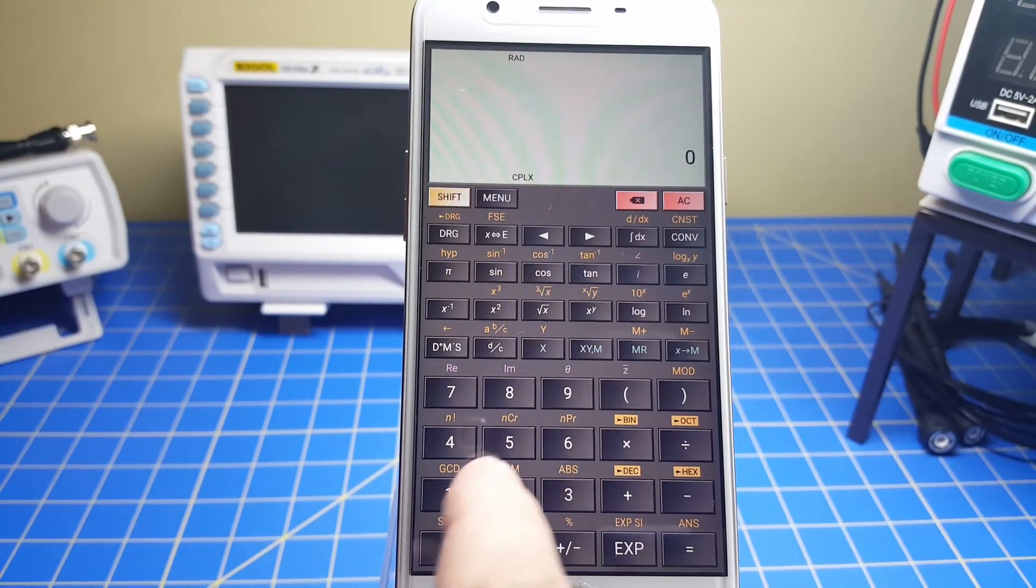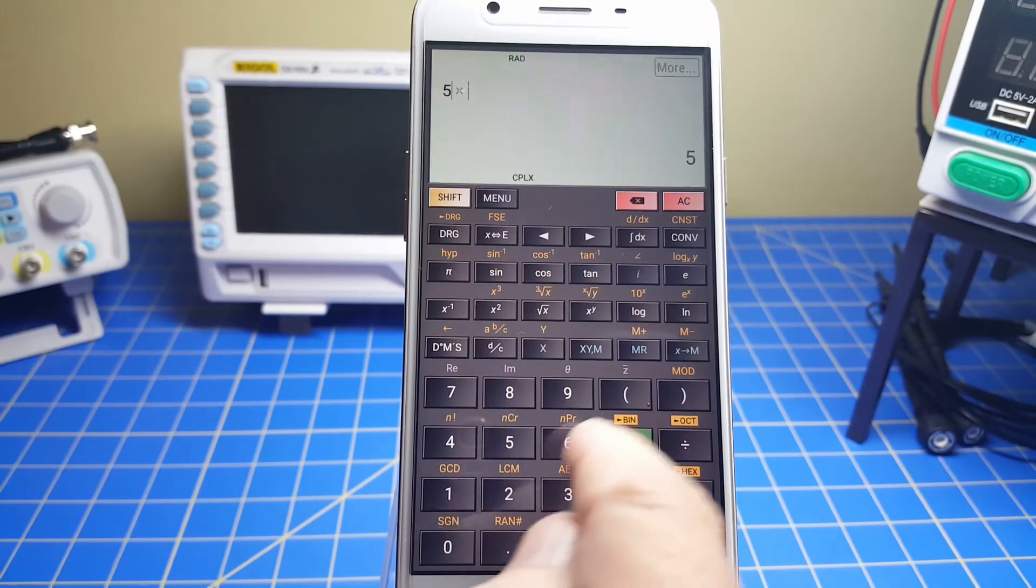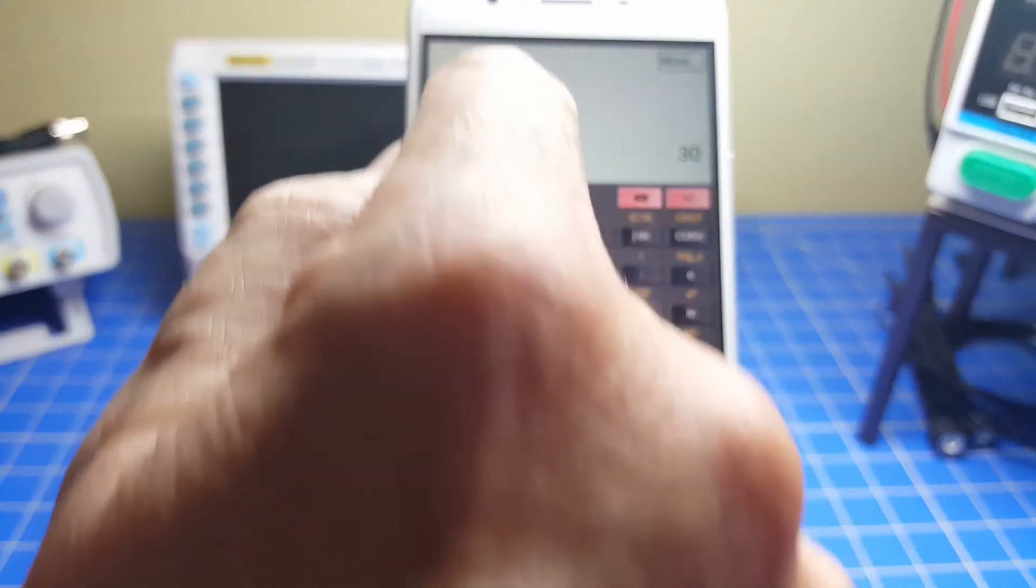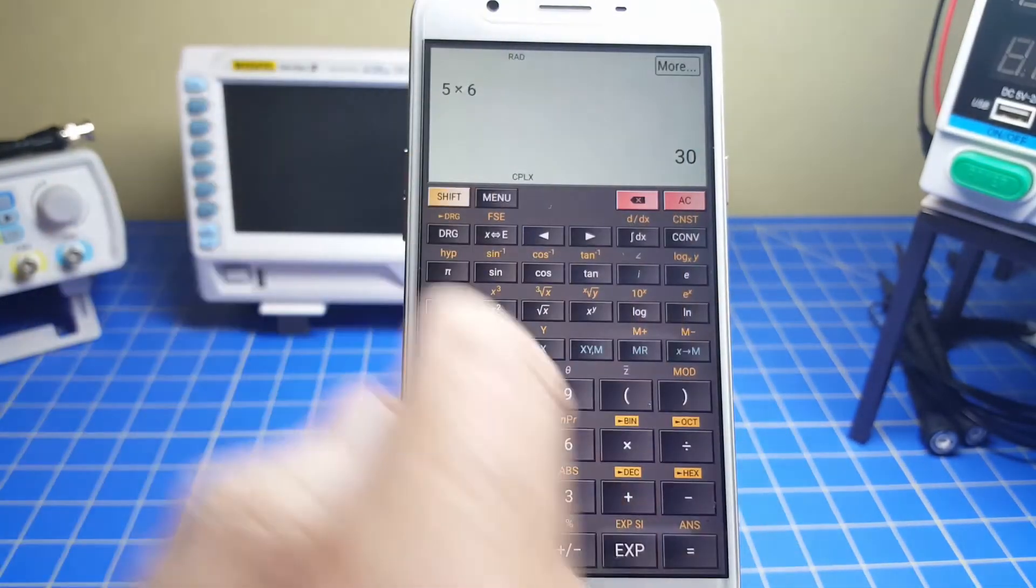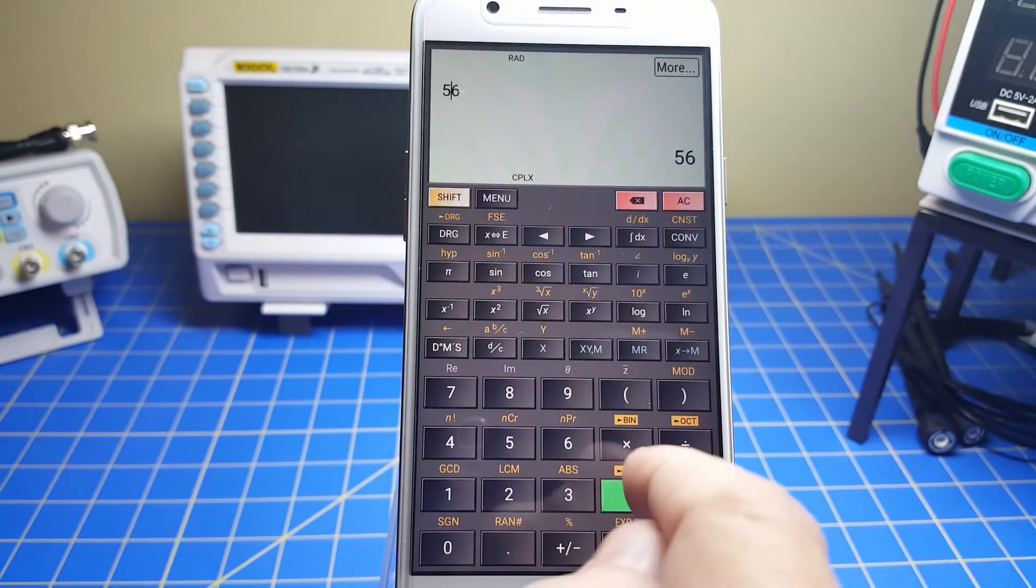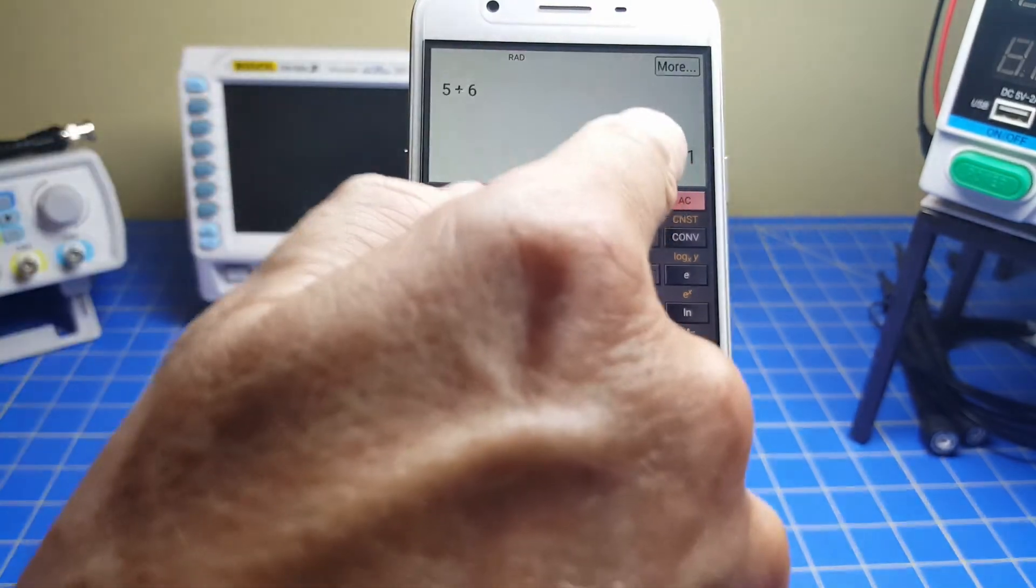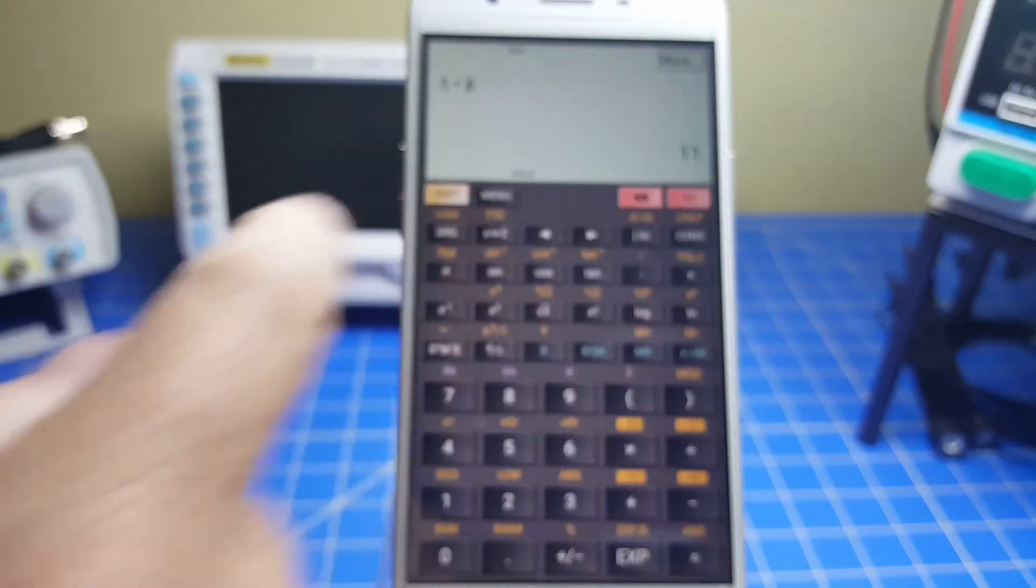Now, another wonderful thing about this is it has a touch screen. So you can say 5 times 6 and go back and say, no, I meant plus. So you just press where you want the cursor and delete that and put in a plus. And notice as you enter the data, it gives you a real time answer. You don't have to hit equals.